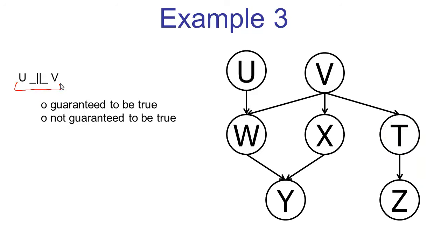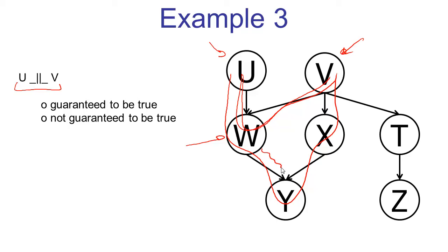Now we're asked about the independence of u and v. There are two paths between u and v. Let's look at the short path first: u, w, v. This path consists of just a single triple, which is a v-structure. The v-structure has the middle node unobserved. We look at the descendants of the middle node — there's just one descendant, y, and that descendant is also unobserved. That means the v-structure here is inactive, so this path u, w, v is inactive. Once we find an inactive path, it doesn't mean we're done — we need to keep checking until we either find an active path or have found that all paths are inactive.